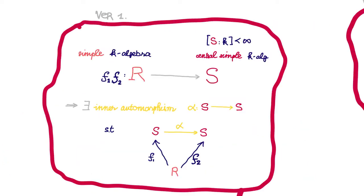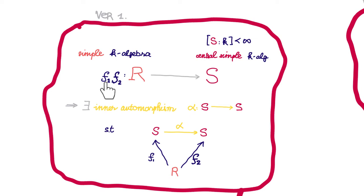A more precise version of Skolem-Noether is as follows. Let S be a central simple k-algebra of finite dimension over k. Now let R be another simple k-algebra, not necessarily central. Then we claim that any two k-algebra homomorphisms from R to S must differ by an inner automorphism of S. In other words, if f1 and f2 are two k-algebra homomorphisms from R to S, then there must exist some inner automorphism alpha of S such that f2 is just alpha composed with f1.